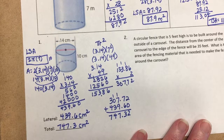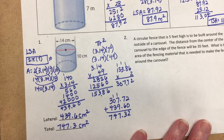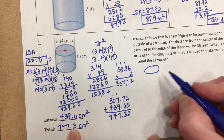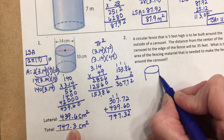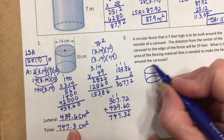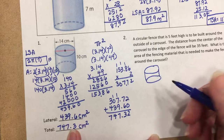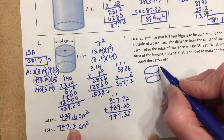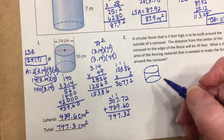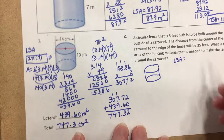Number two: a circular fence five feet high is to be built around the outside of a carousel. The distance from the center to the edge of the fence is 35 feet — that's the radius. Since the fence only goes around the carousel (not on top or underneath), we're only finding the lateral surface area — just the rectangle.